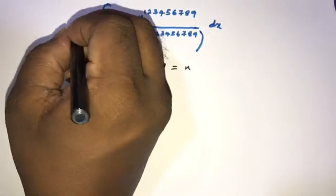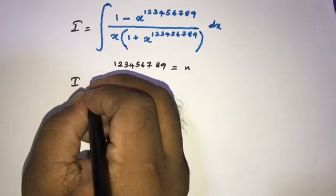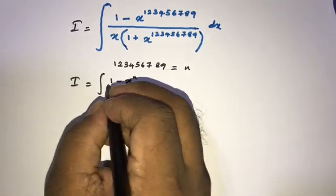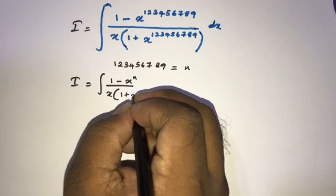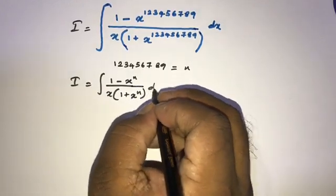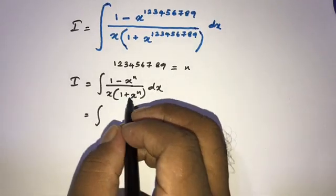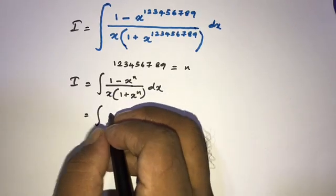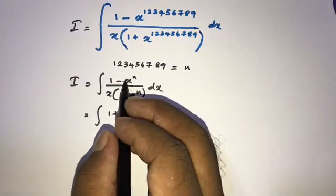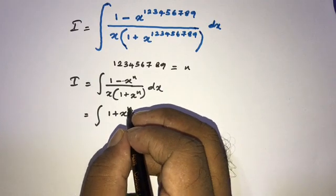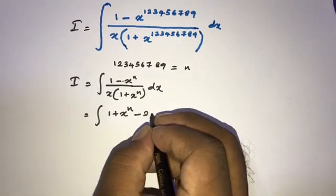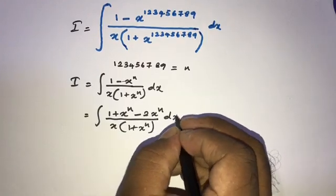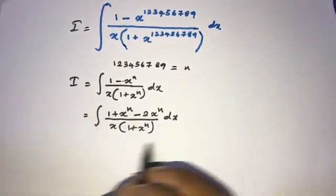So now I am going to call this integral I, where I equals the integral of (1 minus x^n) over x times (1 plus x^n) dx. In the denominator we have (1 plus x^n); we can also write (1 plus x^n) in the numerator, giving (1 plus x^n) minus 2 times x^n, all over x times (1 plus x^n) dx.